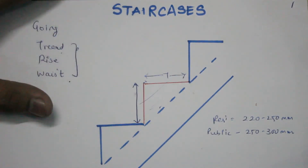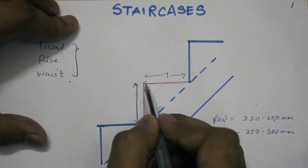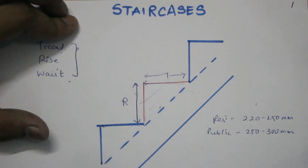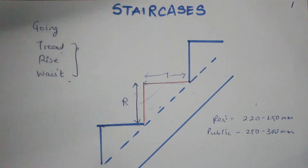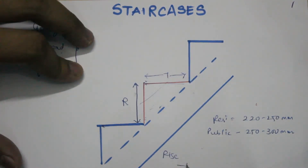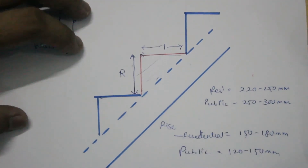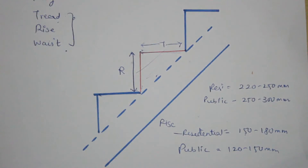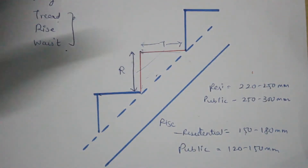The second component is the rise. The rise is the vertical member of the step; it is used to support and connect successive treads. Its height will depend upon the type of building. In residential buildings the riser is 150 to 180 mm, and in public buildings it is 120 to 150 mm. These are empirical values given in the National Building Code of India.